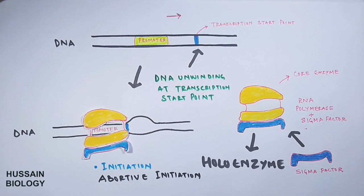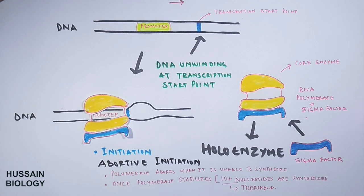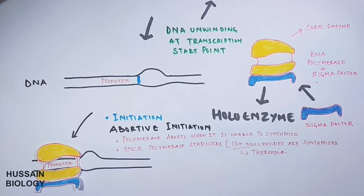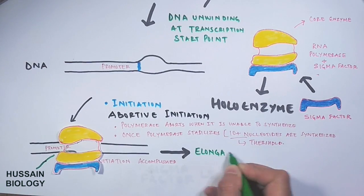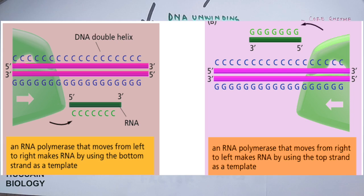The polymerase is not able to go beyond the threshold nucleotide number, which is approximately 10 nucleotides. But once the polymerase stabilizes and is able to go beyond the threshold of 10 nucleotides, that is called successful initiation, and the elongation mode starts, where nucleotides are added to the RNA transcript. Polymerase orientation also matters: since RNA polymerase synthesizes RNA in the 5 prime to 3 prime direction, a polymerase moving left to right uses the bottom strand as template, while one moving right to left uses the upper strand as template.